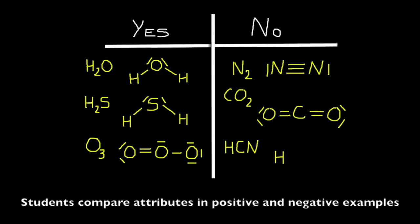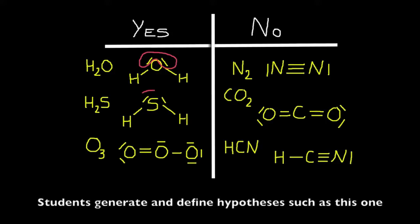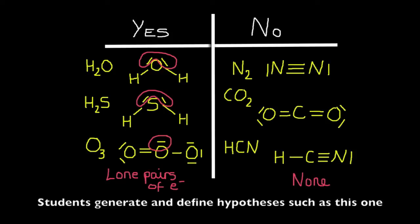Upon inspection of the Lewis structures, the students generate and define hypotheses — such as noticing that the positive examples in the Yes column all contain lone pairs of electrons on the central atom.